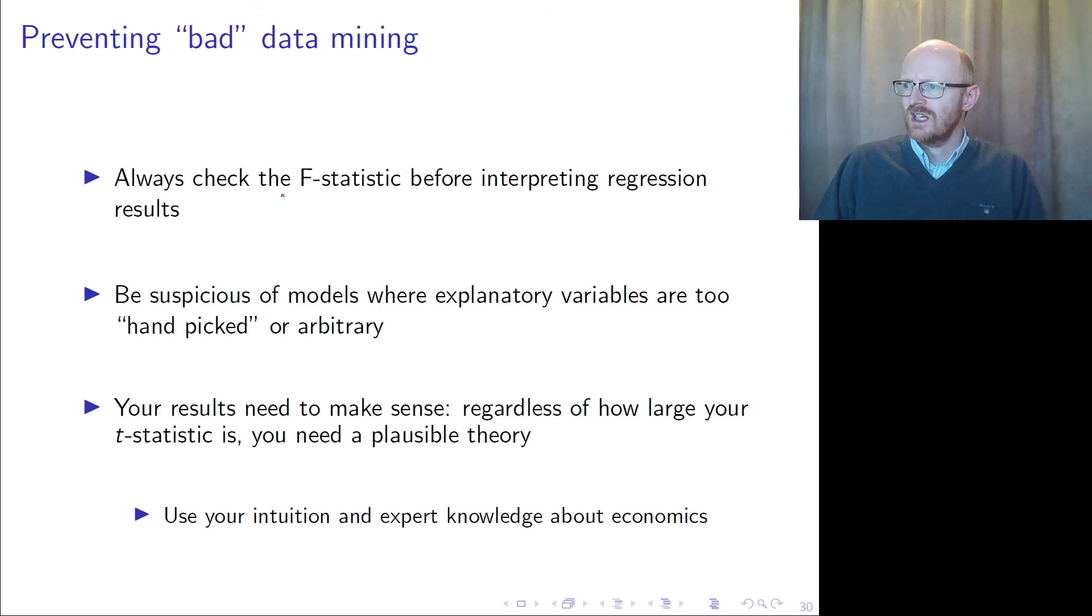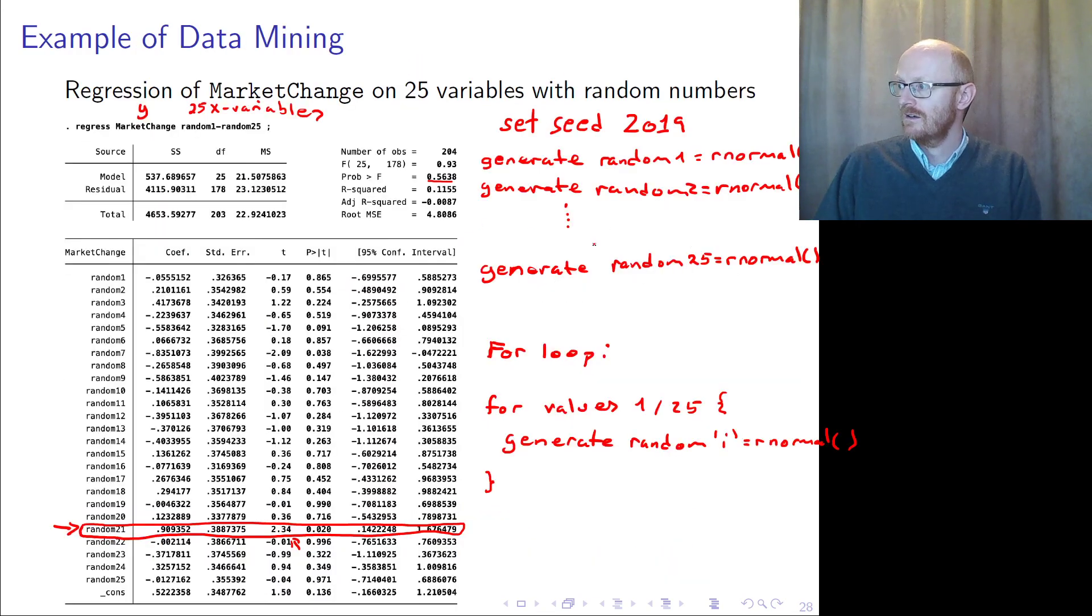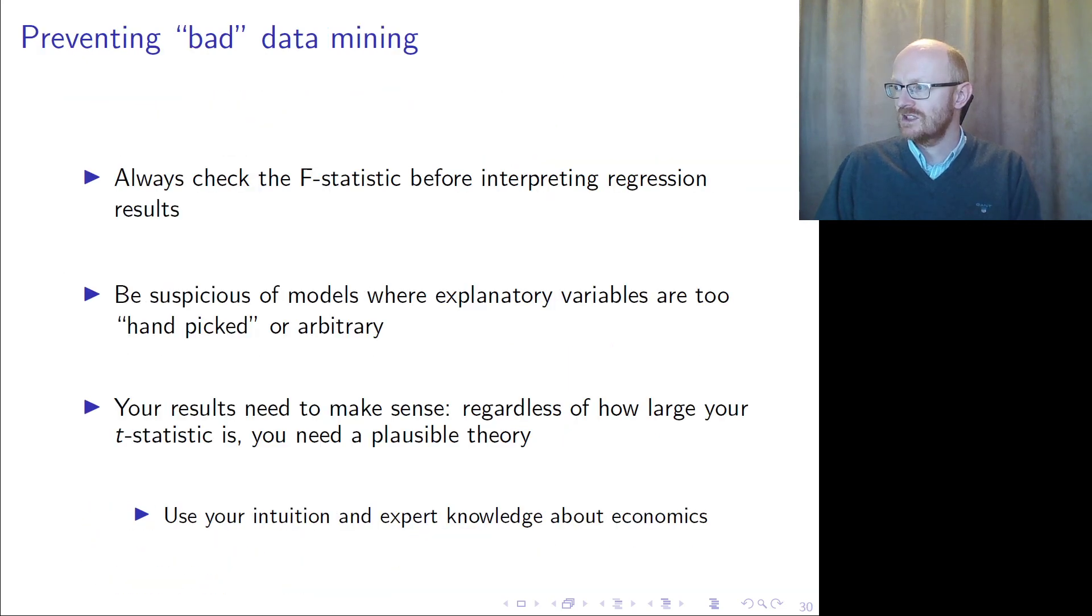So even random numbers can sometimes give you a significant result. So always check the f-statistic before interpreting the regression results. Always check the f-statistic and always be suspicious of models where explanatory variables are really special and not according to theory.